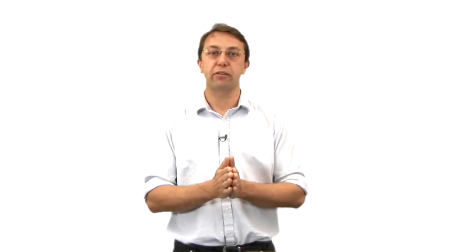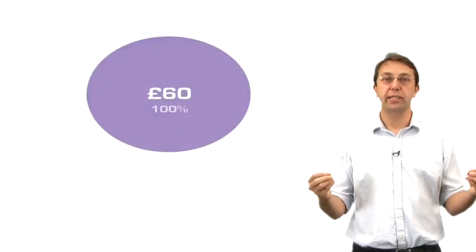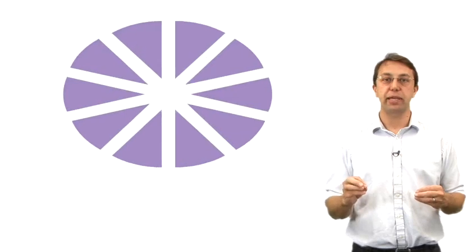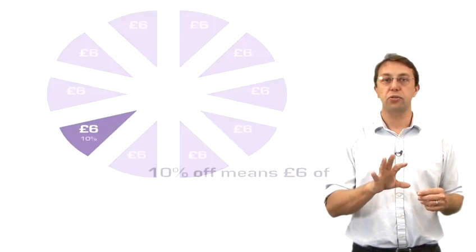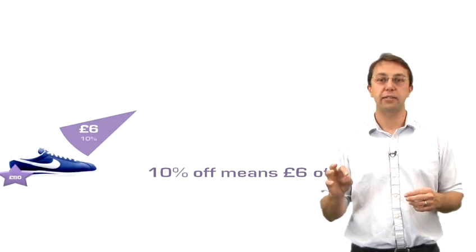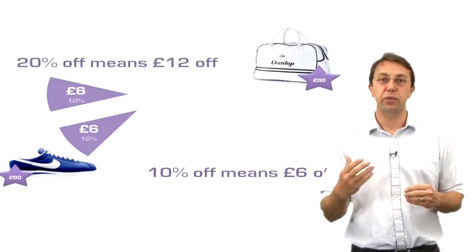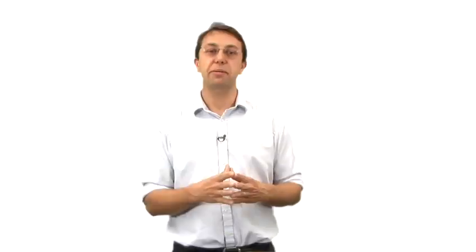But what about if we get other percentages? Percentages like 10% and 20%. We can use the same idea and it is just as simple. So let's have a look at our 60% example and we want to find 10%. What we do is we split that into 10 equal pieces. So I've got 10% in each piece, which is the same as 6 pounds in each piece. So in terms of the shoes, we can see that 10% off means 6 pounds off. And in terms of our handbags, we just double that to find 20% off, which is 12 pounds. So what do you think 15% off would be?